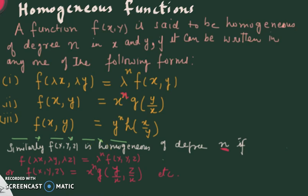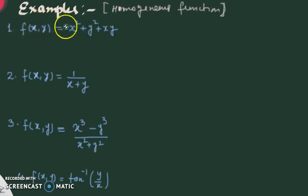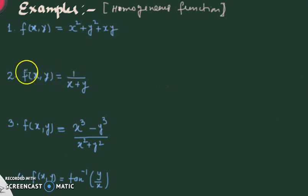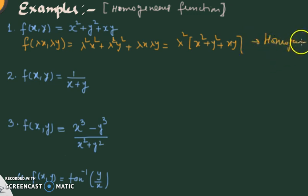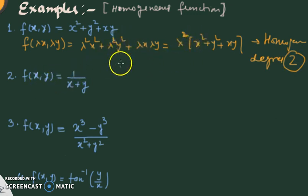Let's check some examples. Example 1: f(x,y) = x² + y² + xy. I prefer the first form — replace x by λx and y by λy. I get λ²x² + λ²y² + λx·λy = λ²(x² + y² + xy). Lambda squared is common and the bracket is the original function. So yes, it is homogeneous of degree 2.